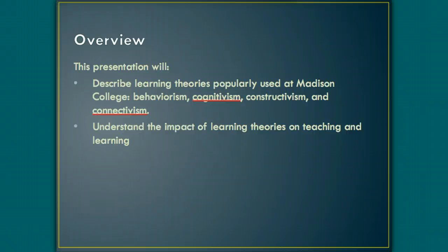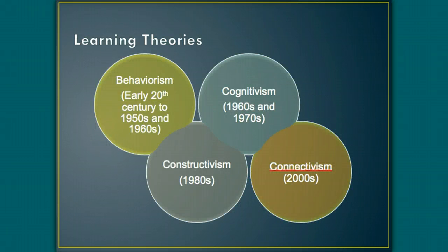The goal of this presentation is to help you select the best learning theory for designing the structure and the learning activities in your online course. Learning is a complex process involving mental processes that are influenced by emotional and environmental factors which can support or hinder learning. Learning theories have evolved over time to take into consideration these complex factors in an effort to explain how learning occurs and to prescribe instructional strategies to facilitate learning.